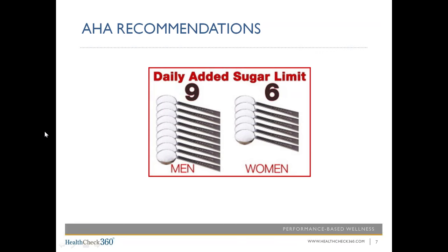How much sugar is too much? Ideally, we'd aim for zero added sugar, but the American Heart Association recommends an upper limit: no more than 9 teaspoons per day for men and 6 teaspoons per day for women — and those are teaspoons, not tablespoons. Sugar is listed in grams on nutrition labels, and one teaspoon equals 4 grams. This means women should cap added sugar at 25 grams per day, while men should stay below 37.5 grams per day.